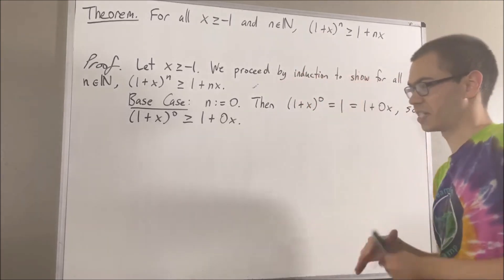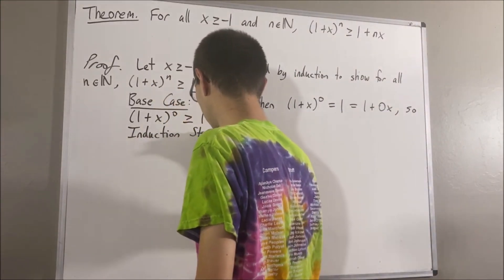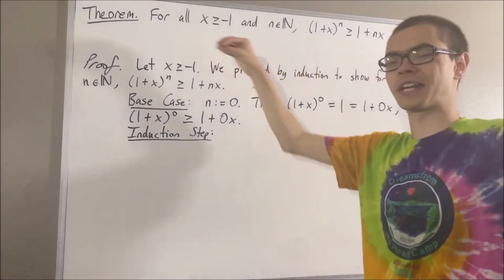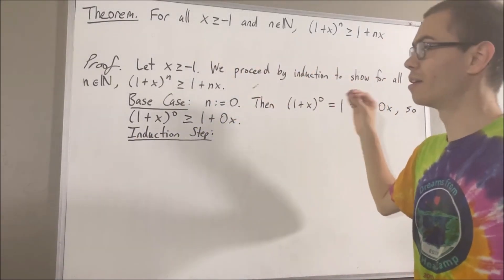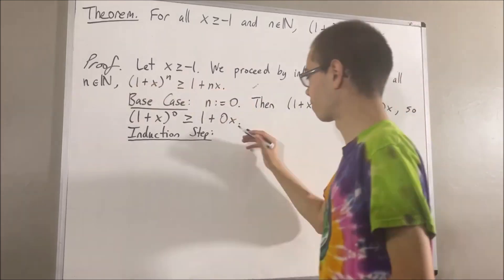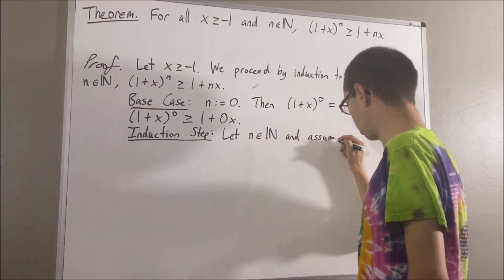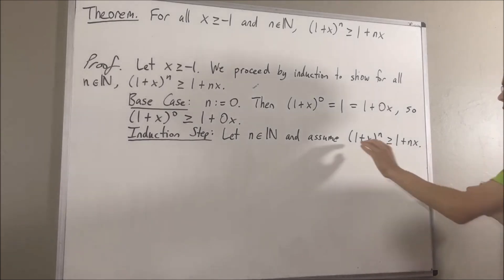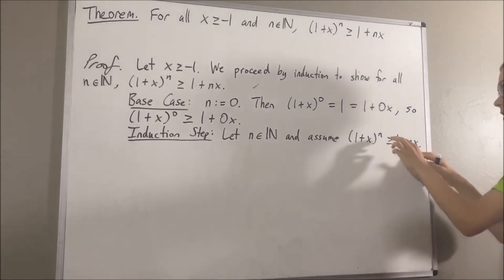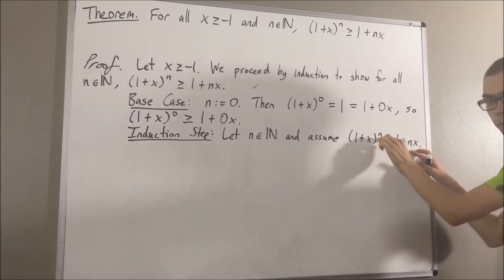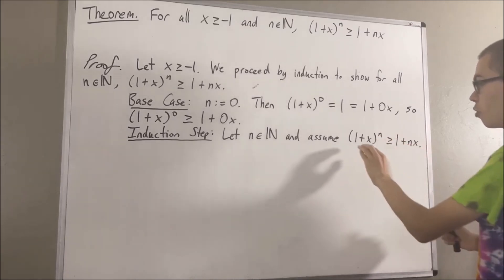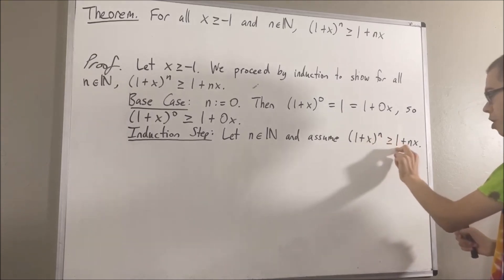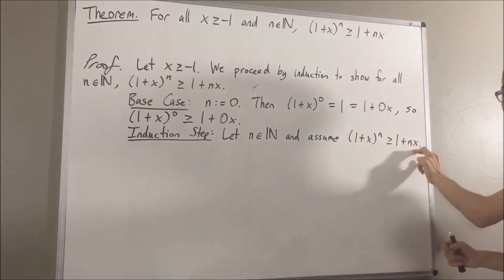Now, let's move on to the induction step. In the induction step, we give ourselves an arbitrary natural number n where the inequality is true. Our whole goal from here is to show that this is also true if, instead of n, we have n plus 1. So, we want to show that 1 plus x to the power of n plus 1 is greater than or equal to 1 plus (n plus 1) times x.